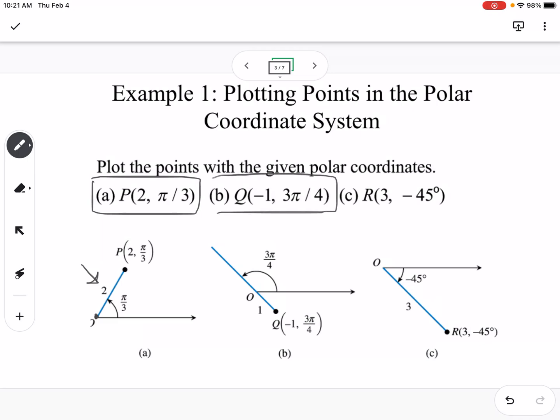The second one, so we have Q is at negative 1, 3 pi over 4, this one's a little bit different because of that negative number in there. So we have our angle 3 pi over 4, just like we would expect it to be, but then notice we went backwards 1, so that's where that point is located.